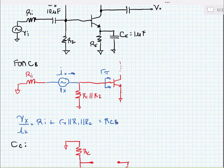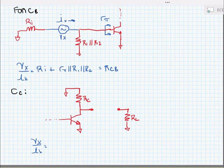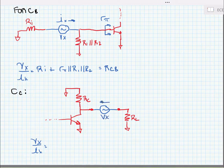Next let's look at the collector. Again, we're going to replace the collector capacitor with a test voltage source VX and measure current IX that flows through that capacitor.